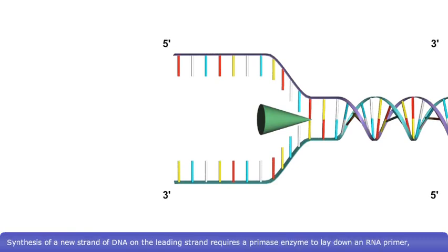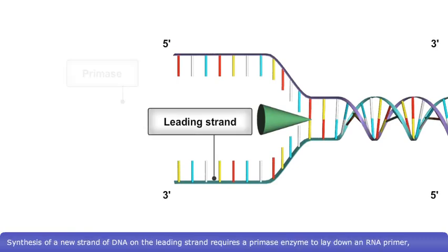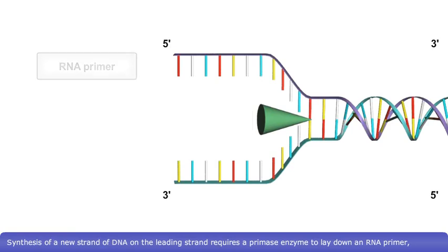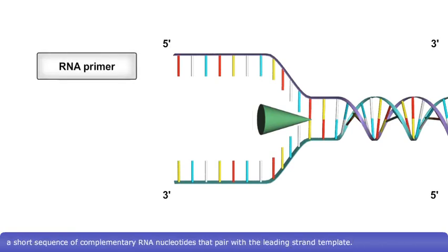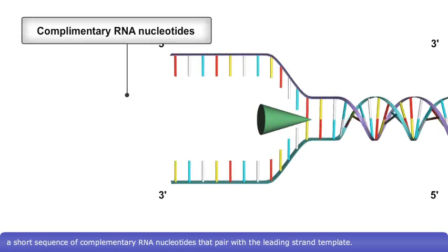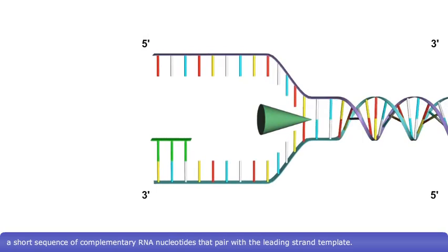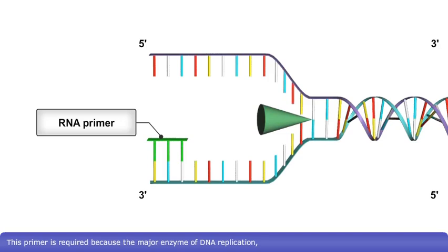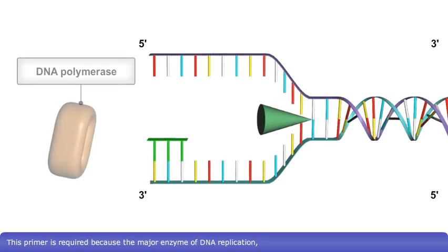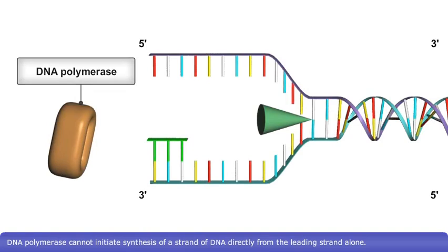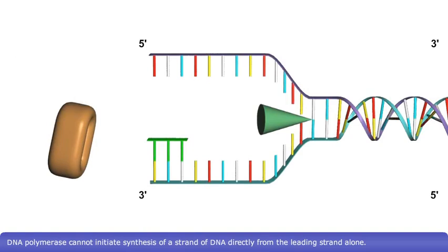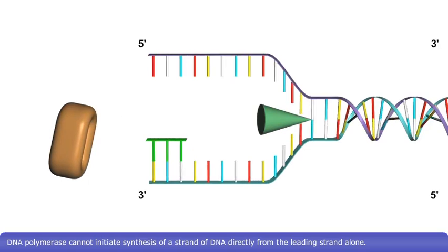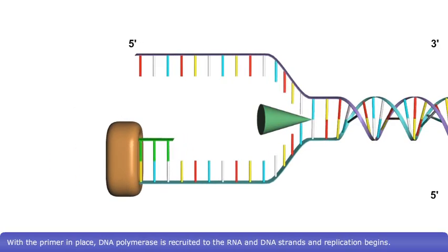Synthesis of a new strand of DNA on the leading strand requires a primase enzyme to lay down an RNA primer, a short sequence of complementary RNA nucleotides that pair with the leading strand template. This primer is required because the major enzyme of DNA replication, DNA polymerase, cannot initiate synthesis of a strand of DNA directly from the leading strand alone. With the primer in place, DNA polymerase is recruited to the RNA and DNA strands, and replication begins.